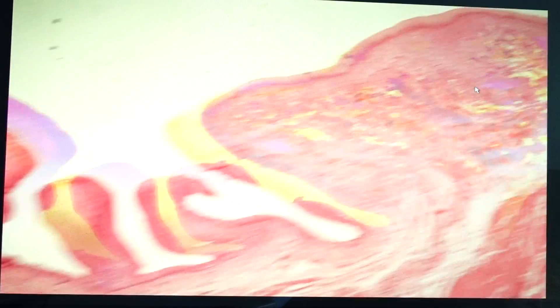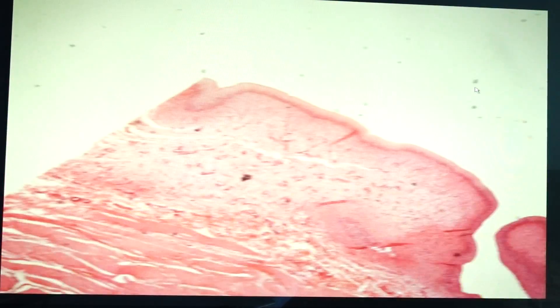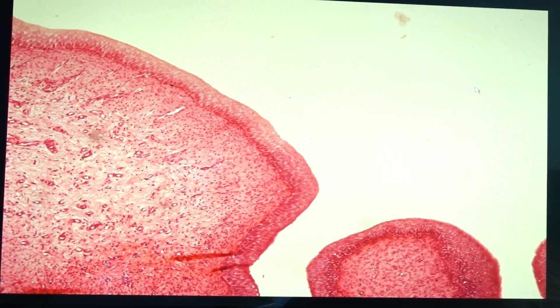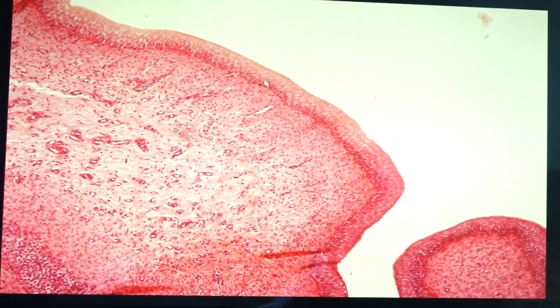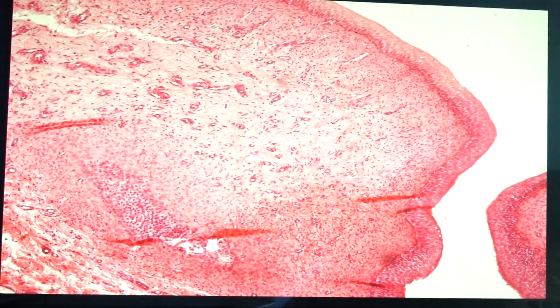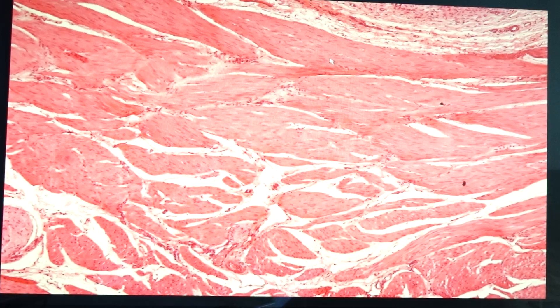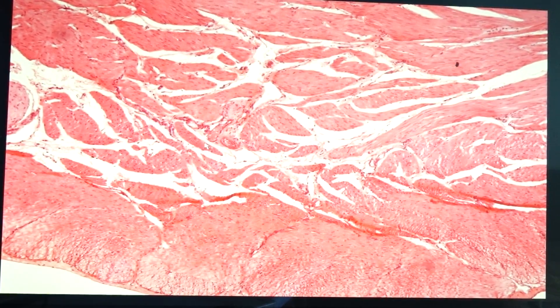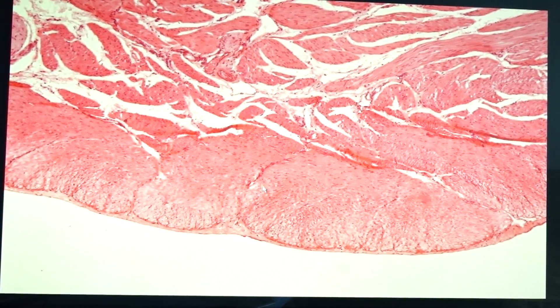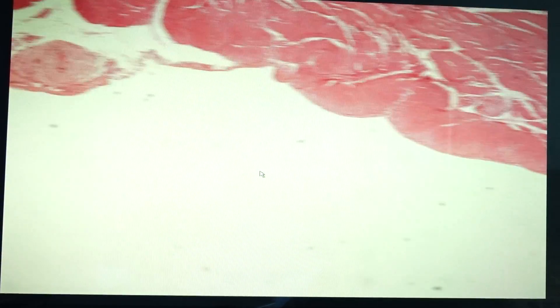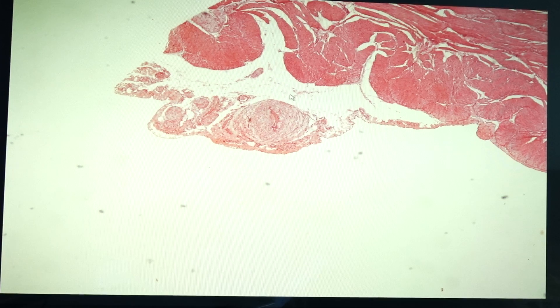Our last slide for today would be the urinary bladder. The urinary bladder is flattened — this is a cross-section of a big organ so you would expect to see a little bit of a flattened area. This would be the lining epithelium, which is a transitional epithelium. You have the connective tissue, and then underneath in the middle layer you have the muscularis, which is composed of an inner longitudinal, a circular, and then another outer longitudinal layer. This one is the adventitia, and the outer covering would be the serosa, which would be exposed to the peritoneal cavity.